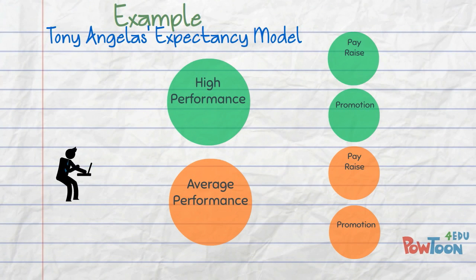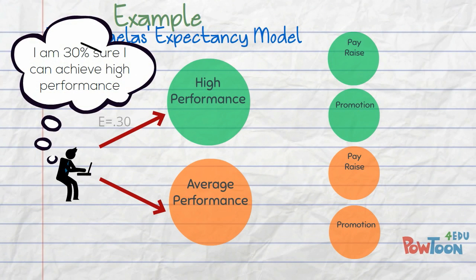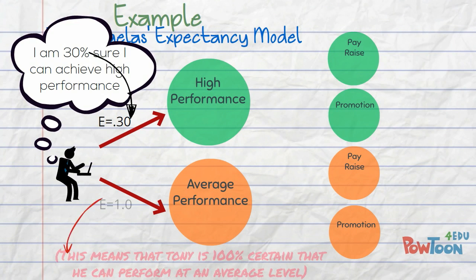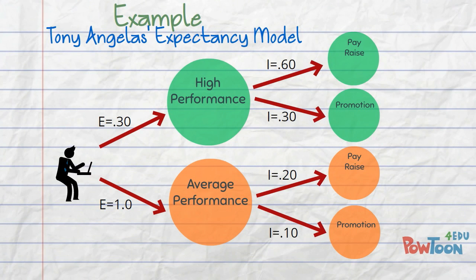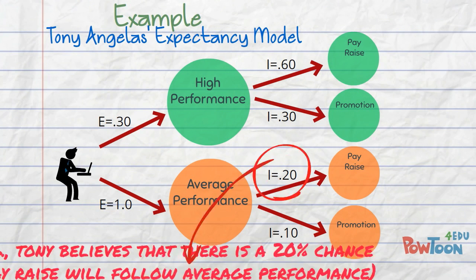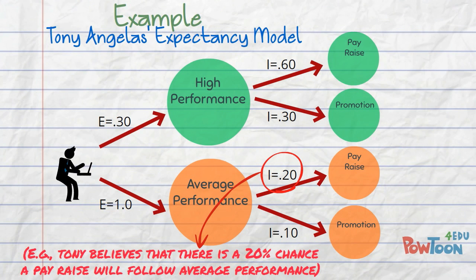Second, expectancy is the belief that exerting a high level of effort will result in the successful performance of a task — that is, the probability that a particular first-level outcome can be achieved. Third, instrumentality is the belief that successful performance will result in certain outcomes — that is, the probability that a particular first-level outcome will be followed by a particular second-level outcome.